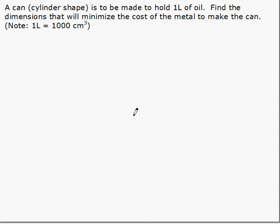The following example is an optimization problem dealing with a cylindrical can. A can, cylinder shape, is to be made to hold one liter of oil. Find the dimensions that will minimize the cost of the metal to make the can. Note that one liter is a thousand cubic centimeters.